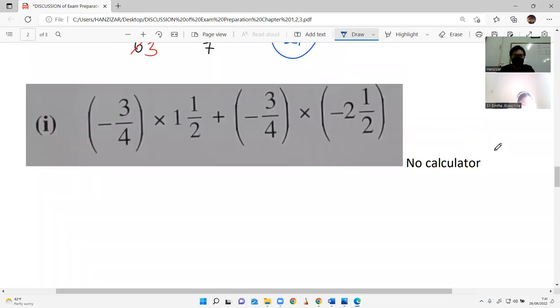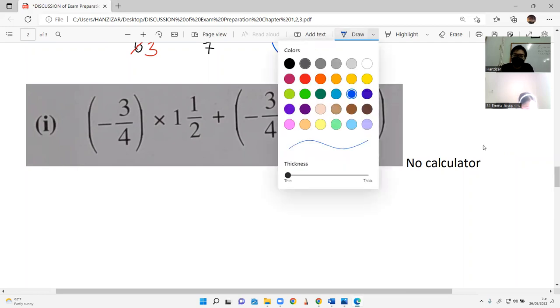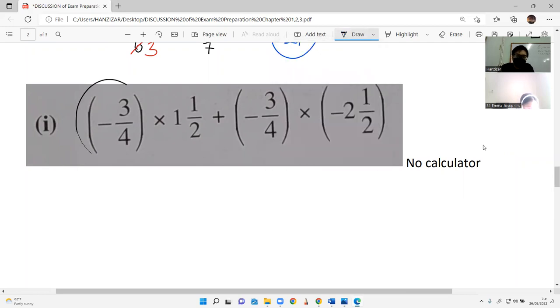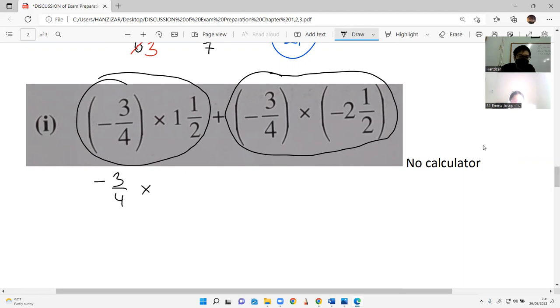I hate this. Which first? This one, multiplication. And then another multiplication. So what I circle is the priority. Negative 3 over 4, you multiply by 3 over 2. Make sense? Change 1 and 1/2 into 3/2, mixed into improper.